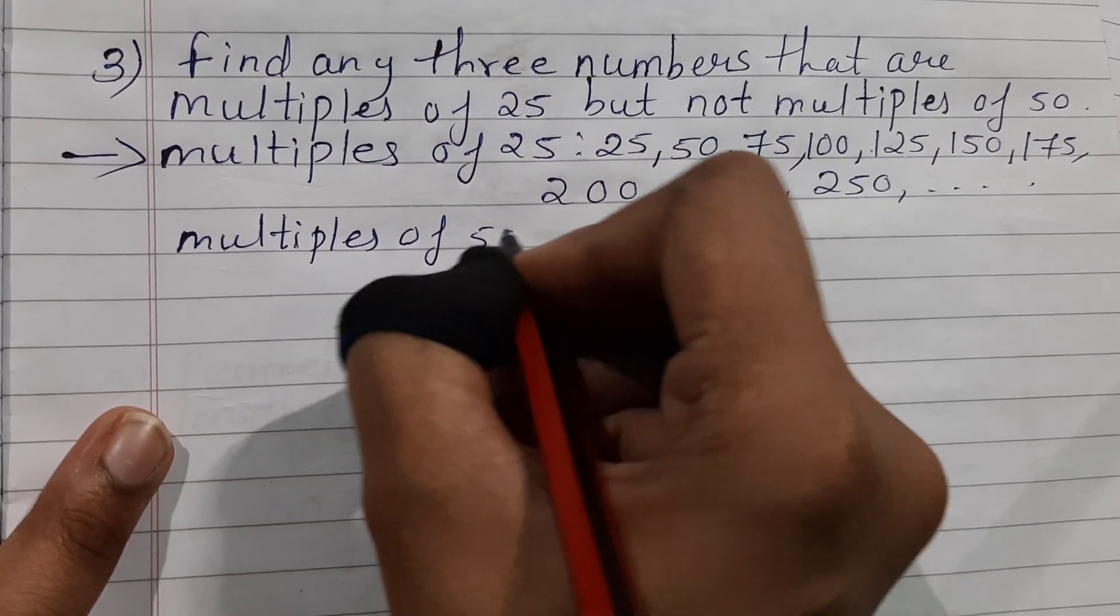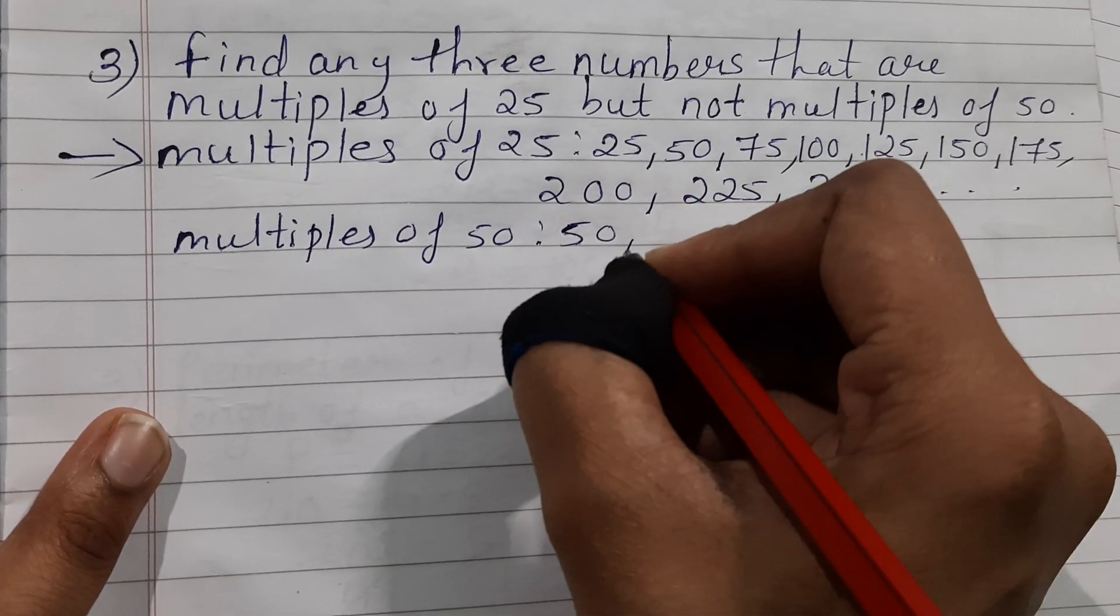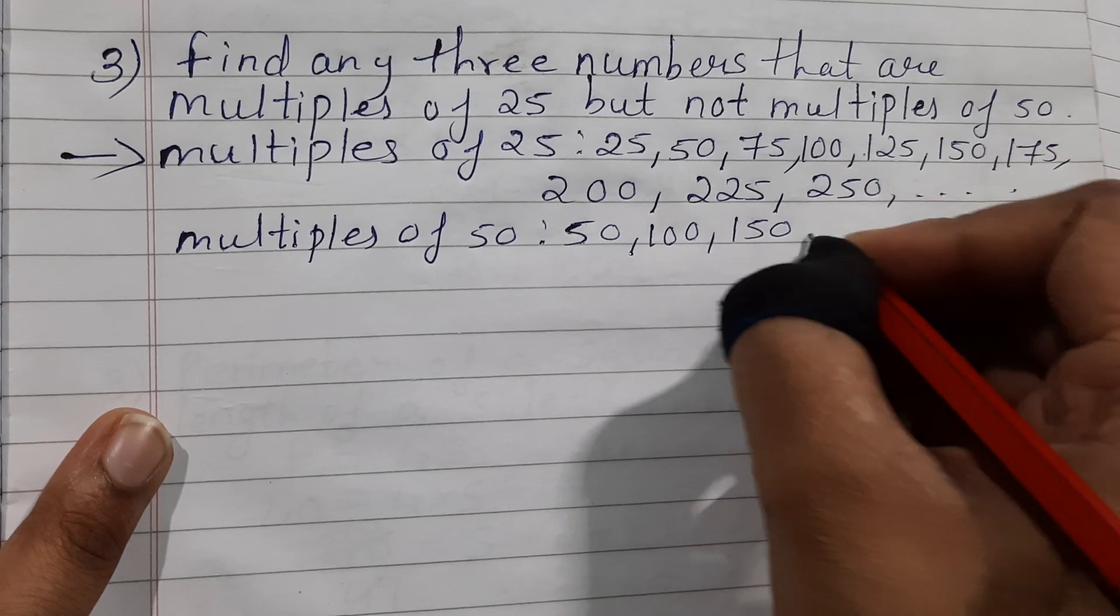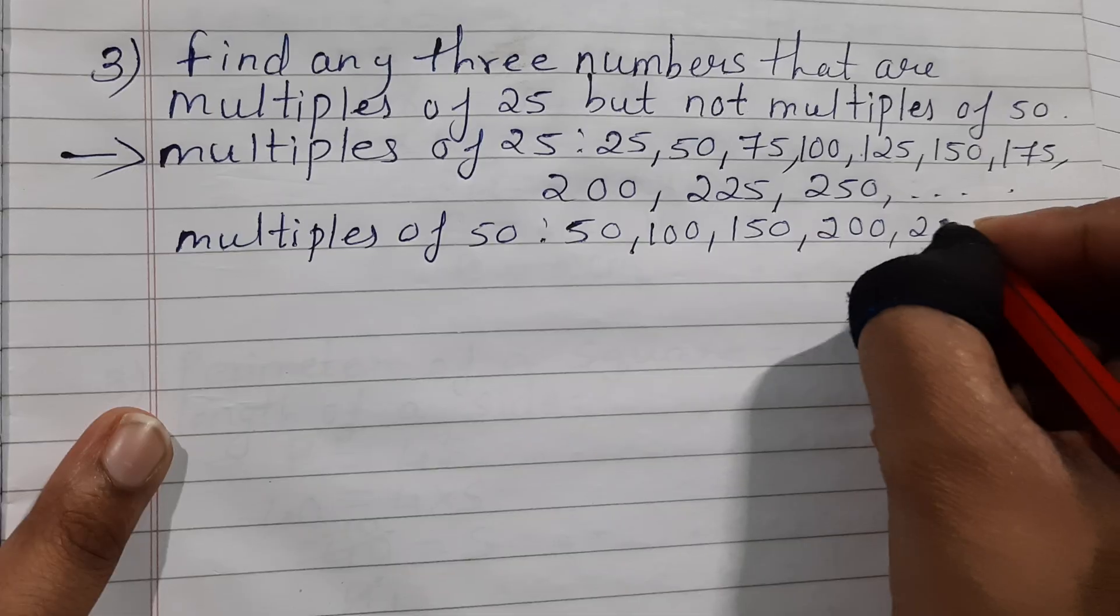Multiples of 50 are 50, 50 twos are 100, 50 threes are 150, 50 fours are 200, then 250, then 300 and so on.